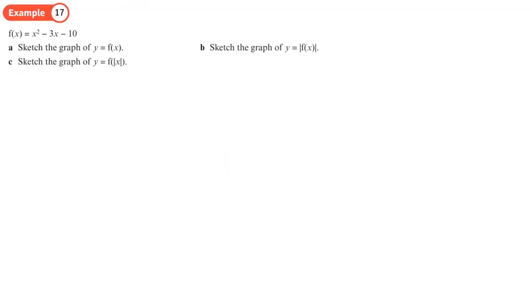Right, so first thing we need to do is we're going to sketch this graph of f of x equals x squared minus 3x minus 10. So to help me do that, it's a u-shape, so I'm going to factorize it.